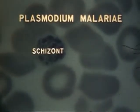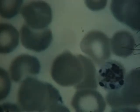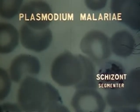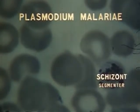The pre-segmenter shown here practically fills the normal-sized red cell. This mature segmenter produces eight to ten merozoites. Six to twelve, with an average of eight, is typical of malariae.